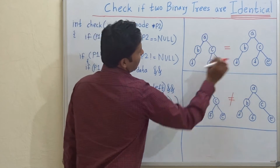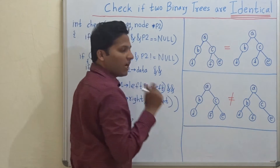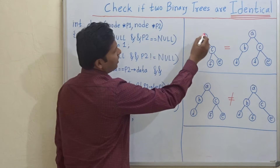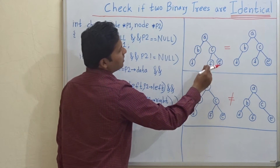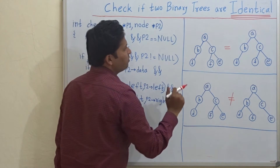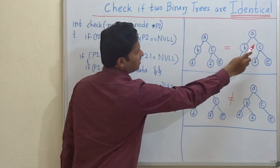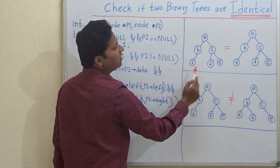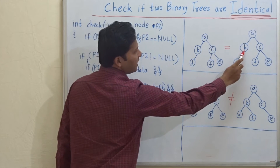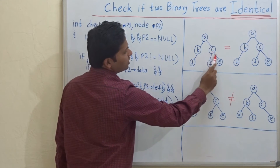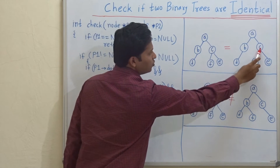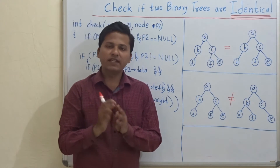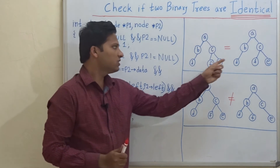These two binary trees are identical. Why are they identical? For each node in this tree, the patterns are exactly the same — A holds two children, and in this tree also A holds two children. Then B has one left child, and in this tree also B has one left child. C has two children, and in this tree also C has two children, and all data is exactly the same. That is why these two trees are identical.